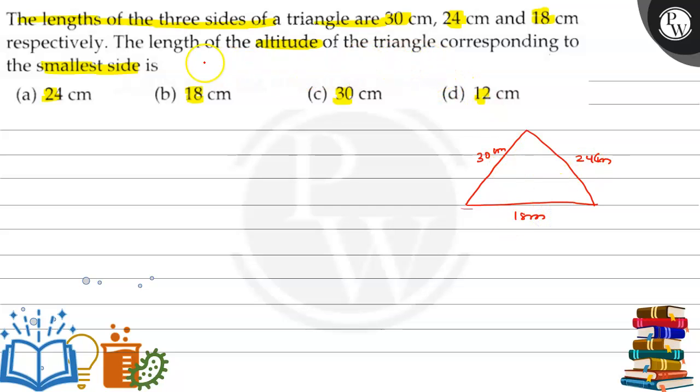We need to find the altitude corresponding to the smallest side. The altitude is on the smallest side. To find the altitude, first we have to find the area of the triangle.